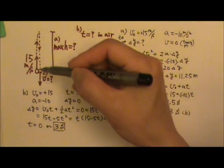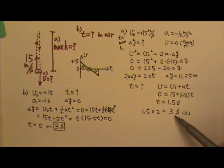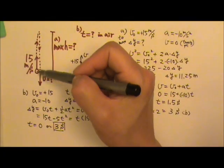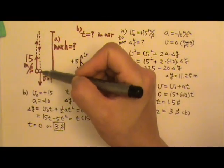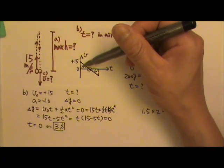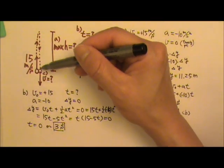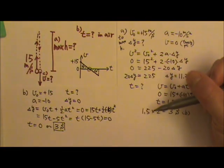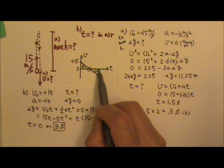So you can either go to the maximum height, multiply the time by 2, and get the total time — or just solve all the way through and find the time directly. The reason you can multiply by 2 is because the upward trip and the downward trip are symmetric. If it takes 1.5 seconds up, it takes 1.5 seconds down.